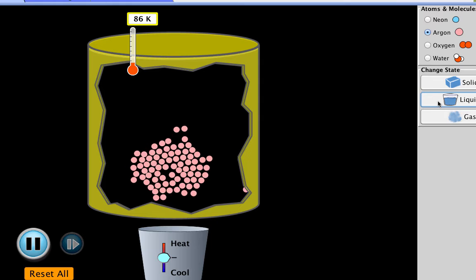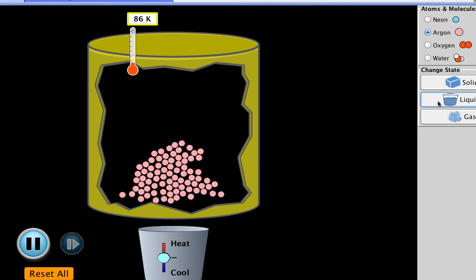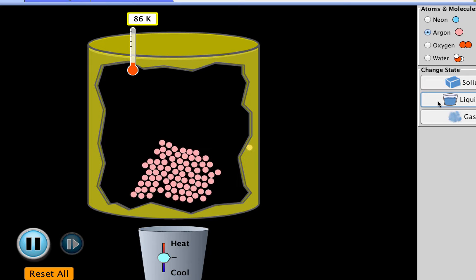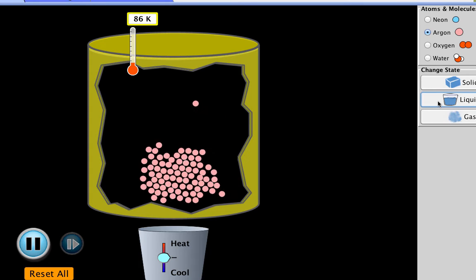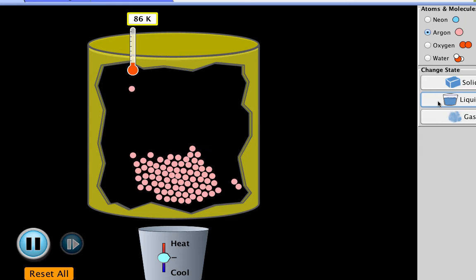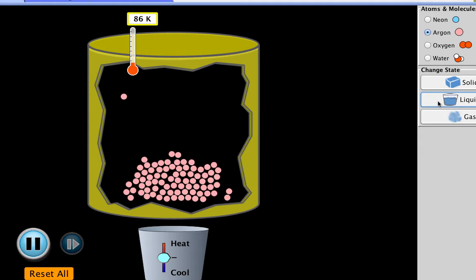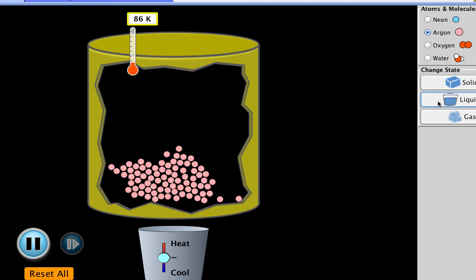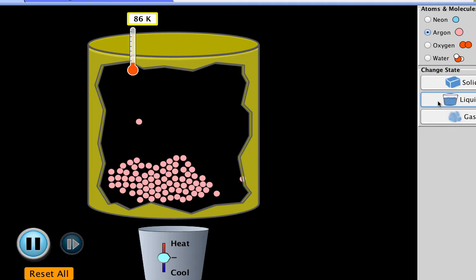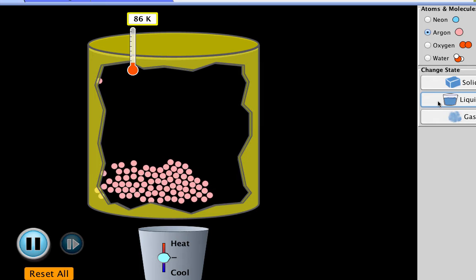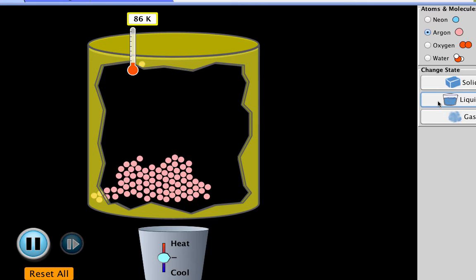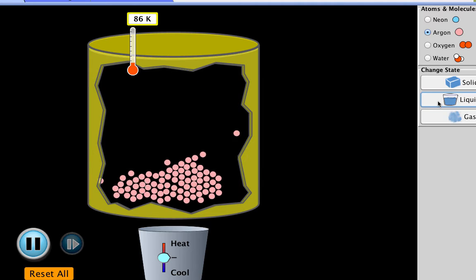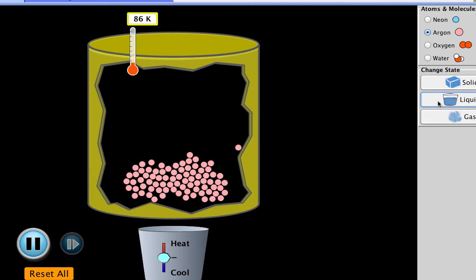Now let's look at a liquid. In the liquid phase, the particles are slightly more spread out and slightly less orderly than they were in the solid phase. Notice they're also able to move around each other a bit more. They're not just vibrating in place. Also, because they're still pretty close to one another, we can say that there are pretty strong attractive forces holding them together, but not as much as they were in the solid phase.